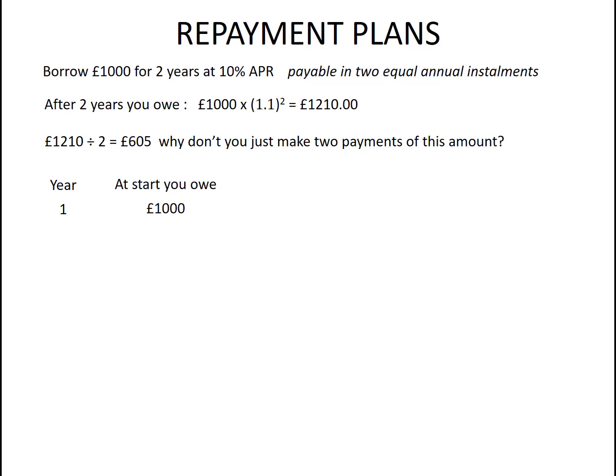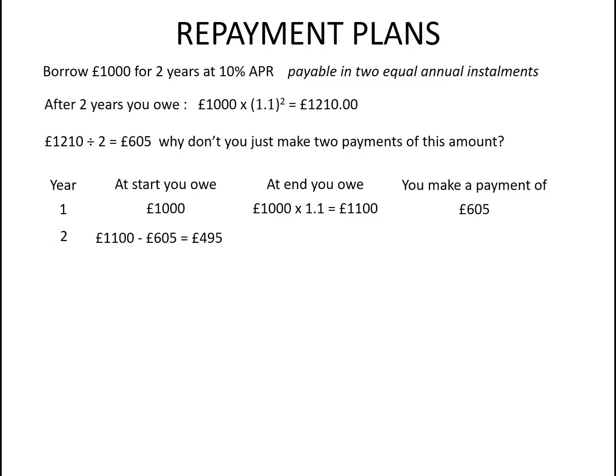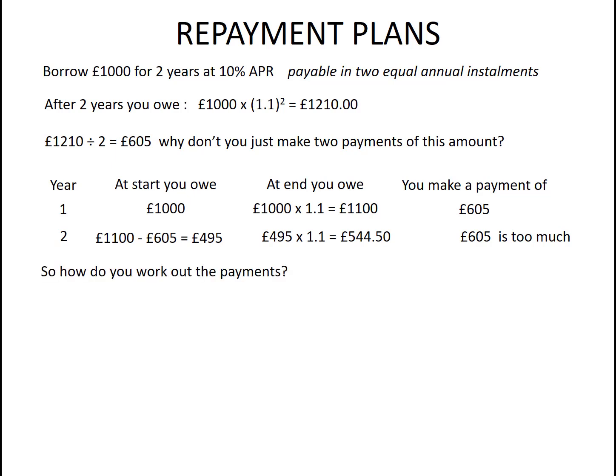At the start of year one I owe £1,000. At the end I owe £1,000 × 1.1, then I make a payment of £605. That means on the first day of year two all I owe is £1,100 − £605 = £495. Adding 10% gives only £544.50, so a payment of £605 is far too much. The reason is that I'm not really borrowing £1,000 for two years — I'm borrowing £1,000 for a year, paying a chunk off, then borrowing just the leftover for the next year.